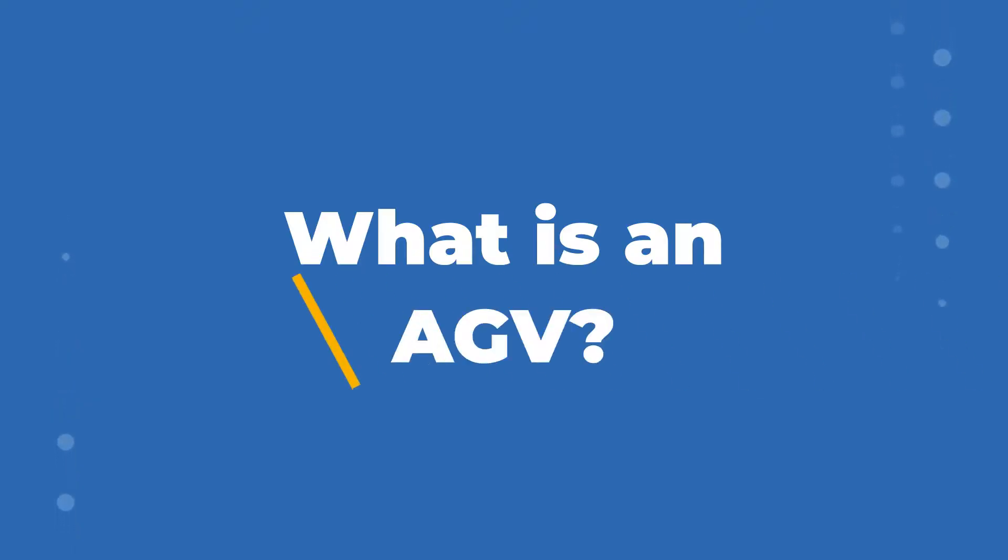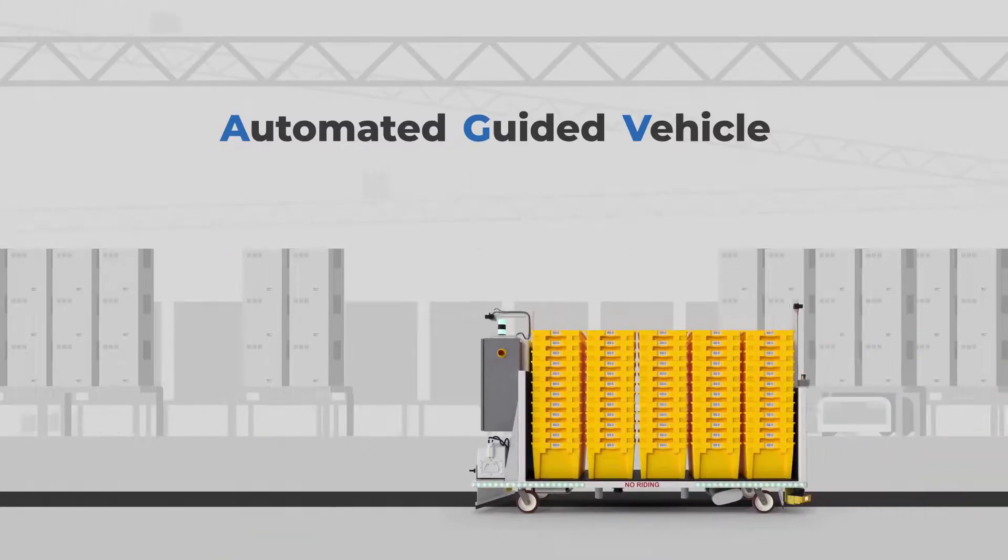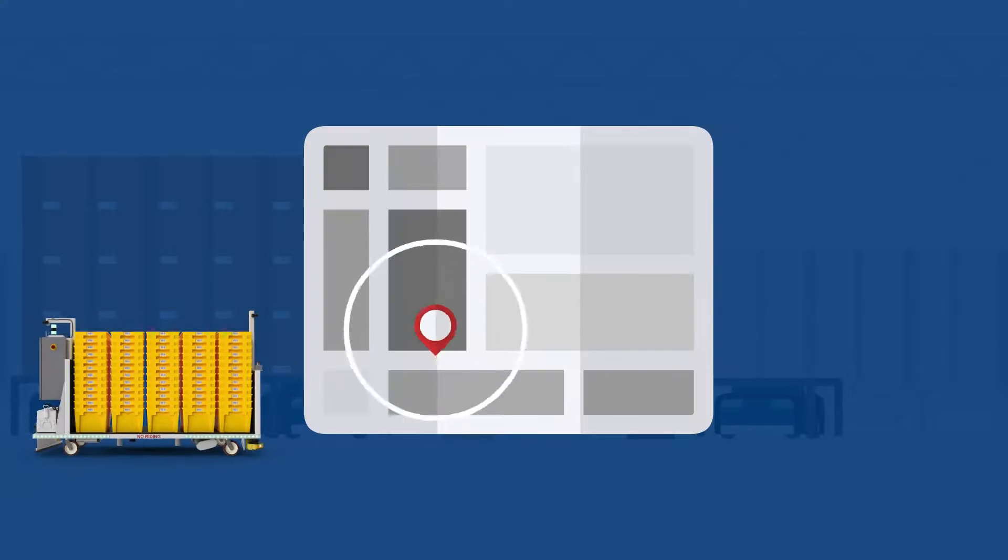What is an AGV? An automated guided vehicle has been pre-programmed for transportation and is designed to carry out certain tasks on defined routes.